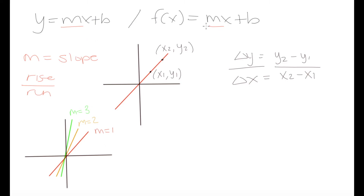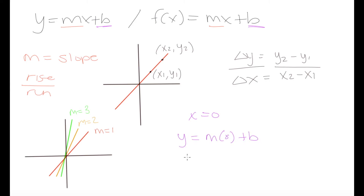So m is the slope of our graph, y is our y-coordinate or output value, and x is our input value or x-coordinate. The remaining term is b. To understand b, we set x equal to zero: y = m(0) + b simplifies to y = b. So when x equals zero, y equals b — meaning b is our y-coordinate when x is zero, also known as the y-intercept.